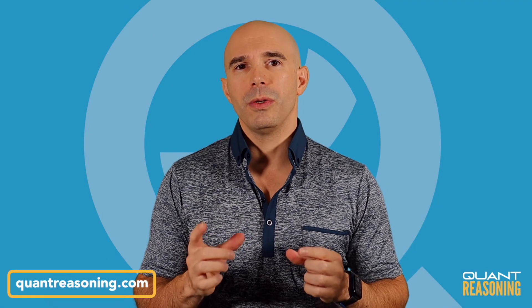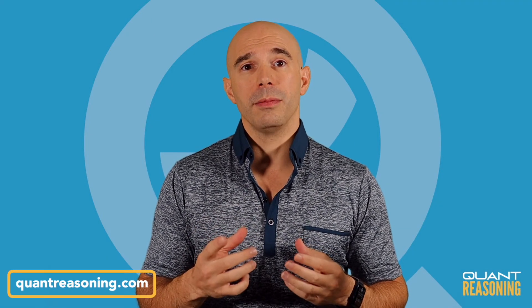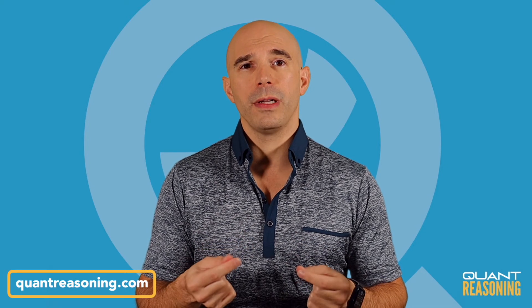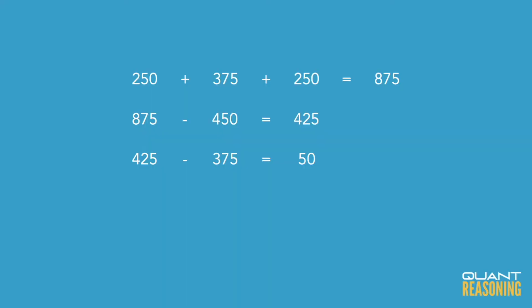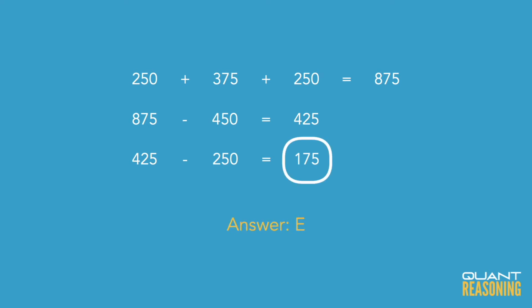The question wants to know: what was our profit on that second bike? We know we sold it for $425, and we either paid $250 or $375 for it. If it was the $375 bike that we sold for $425, our profit would only be $50, and that's not one of the answer choices. So we must be talking about the cheaper bike — the one for which we paid $250. If we sold it for $425, our profit was $175, and that's the answer.